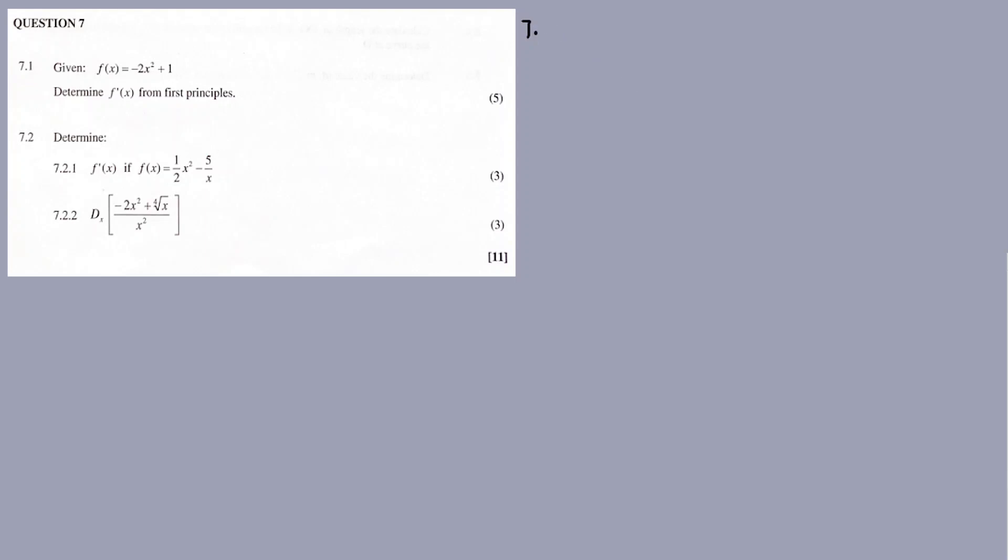So anyway, 7.1 — it's first principle. The question says: find the derivative using first principle. So, first principle — we know that the first principle is f prime of x equal to the limit of h approaches 0, then it's f of x plus h minus f of x, divided by h.